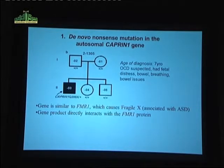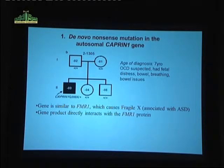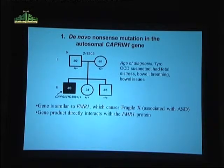The idea is that if we can have a genetic profile attached to the clinical phenotype, we might be able to have an impact in a genomic medicine kind of way to personalize his medical plan. Here's the first of three examples: a de novo nonsense mutation identified in the Caprin1 gene.